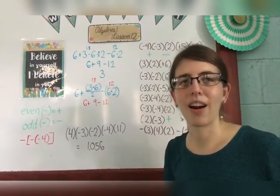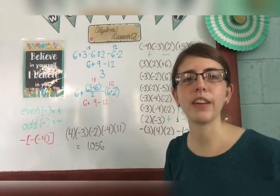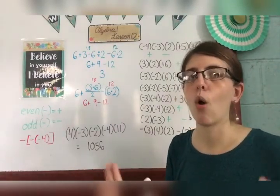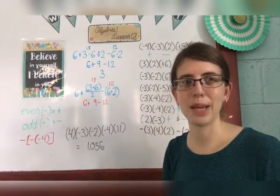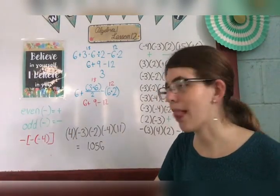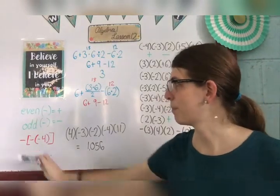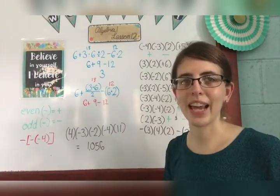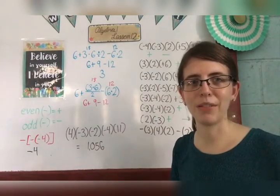Now let's talk about negatives and positives. When you have an even number of negative numbers that you are multiplying or dividing, your answer is going to be positive. If you have an odd number of negative numbers being multiplied or divided, your answer will be negative. So here I have the negative of the negative of the negative of 4 — the opposite of the opposite of the opposite of 4. I have how many negative signs? Count them: one, two, three. That's an odd number, so my answer is negative 4.